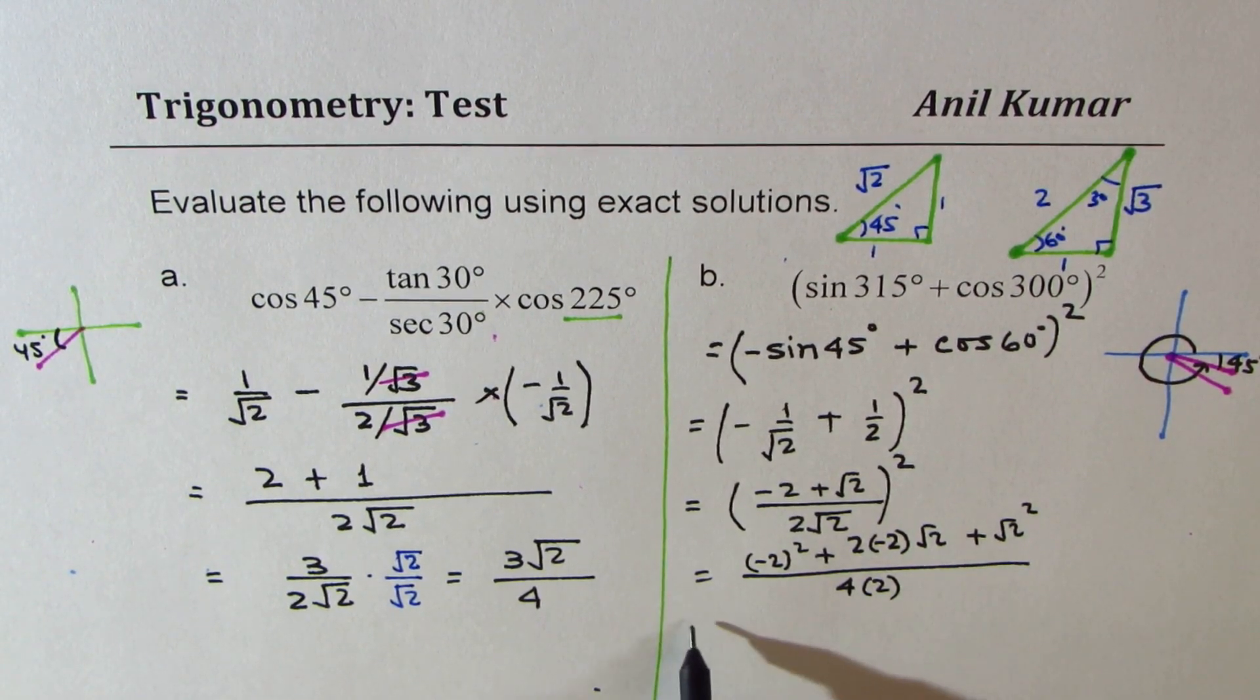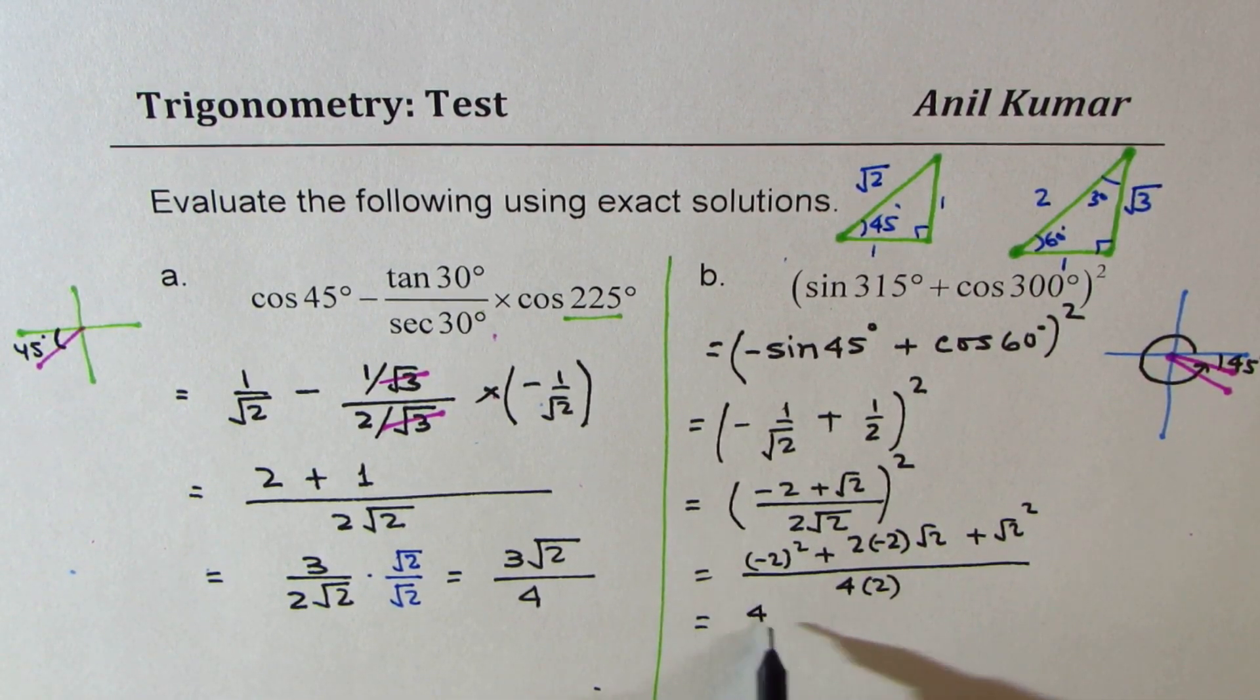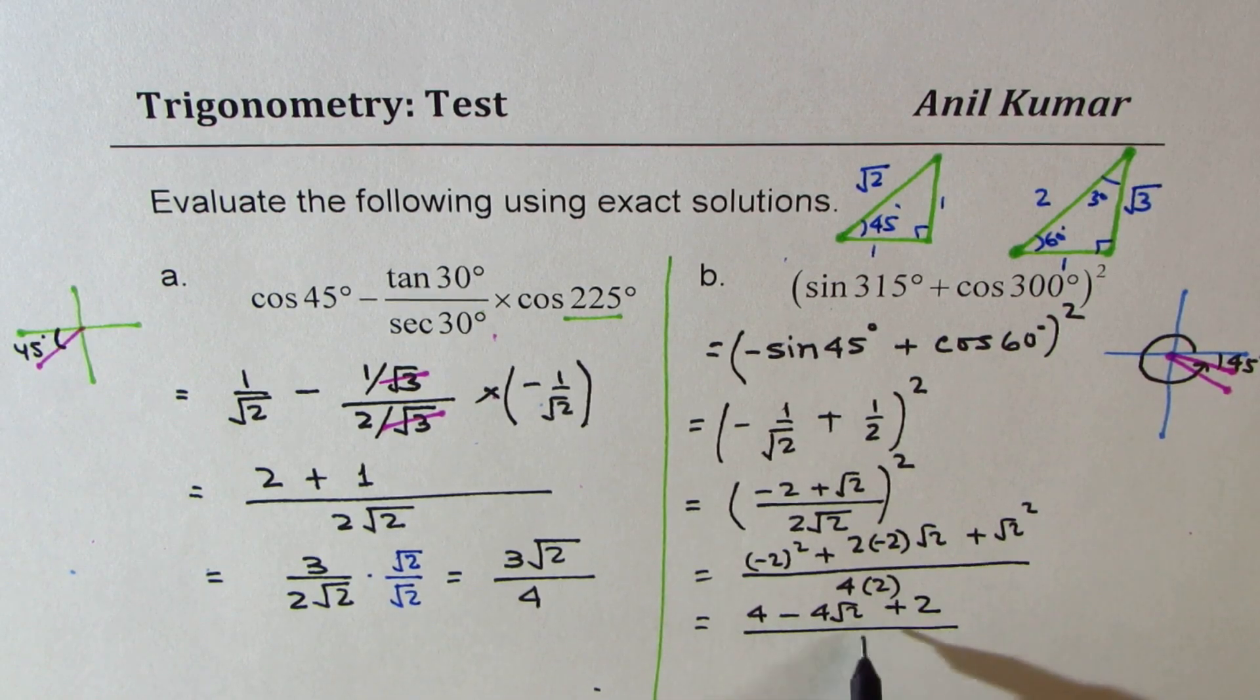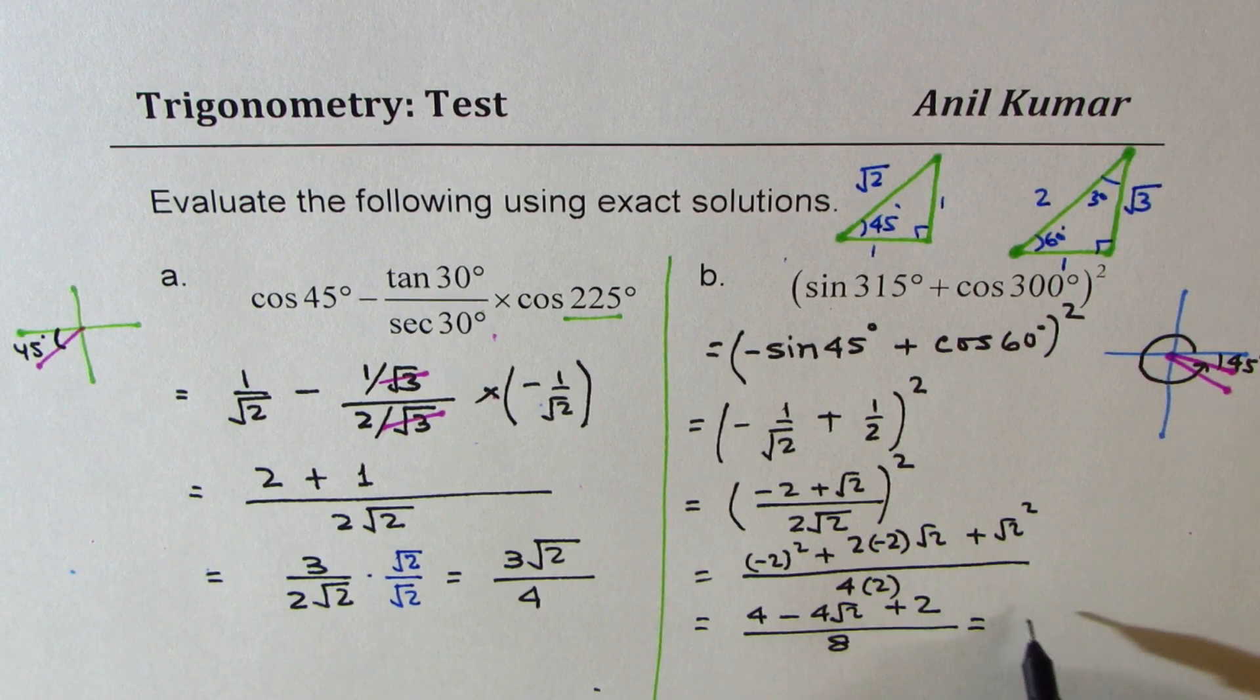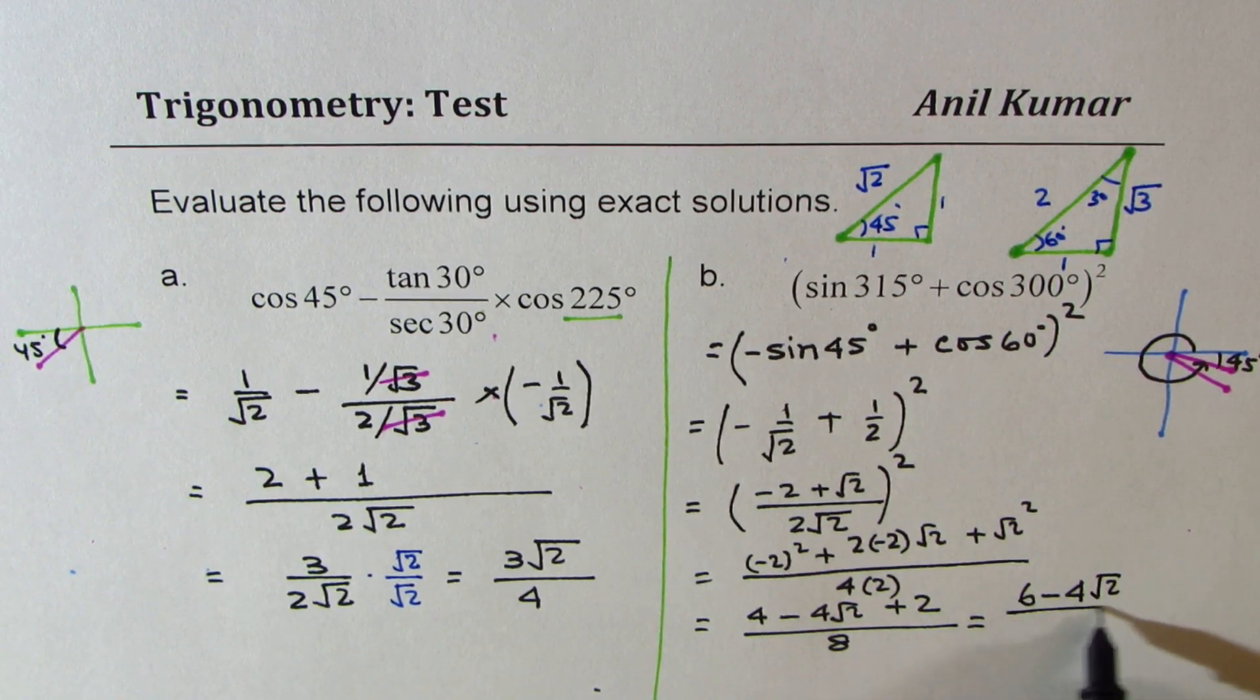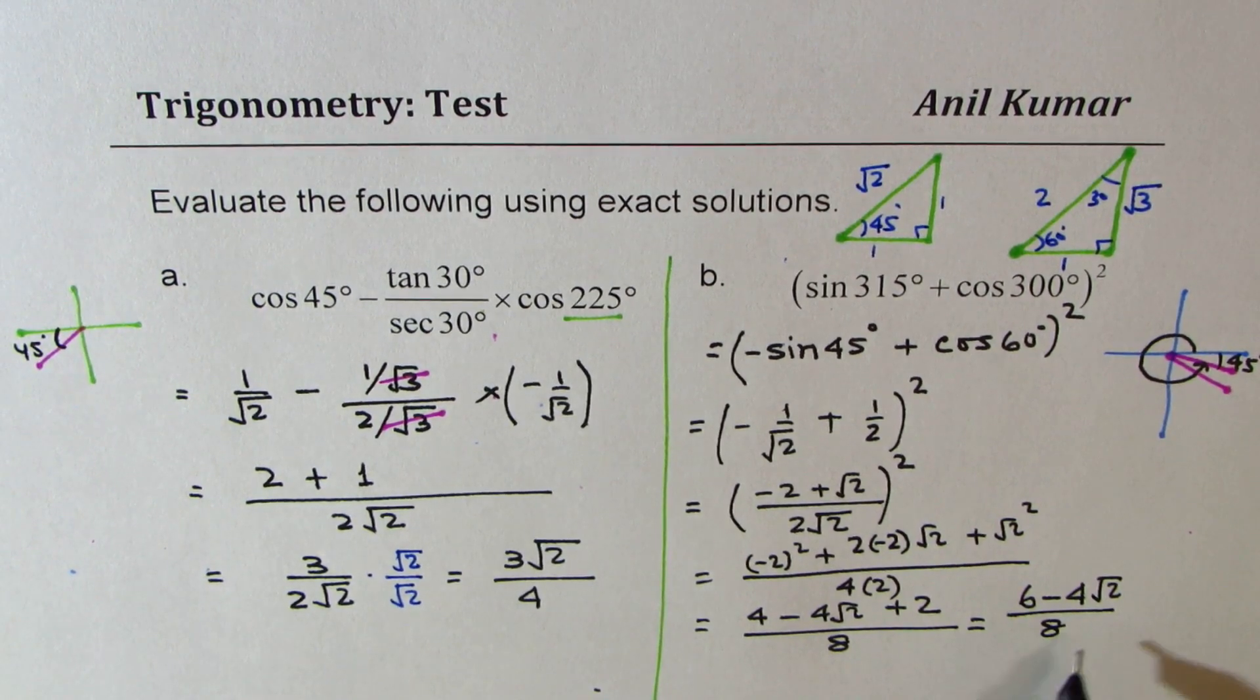Now combining these terms we get 4 minus 4 minus 4 square root 2 plus 2 over 8. That is 4 plus 2 is 6 minus 4 square root 2 over 8.